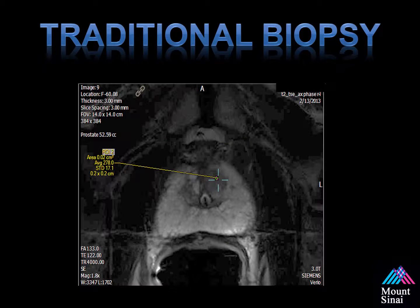This is an example of an axial T2-weighted image of a gentleman who had two prior negative prostate biopsies. If you look, there's an area on the anterior left portion of the screen that has a low signal intensity on T2-weighted imaging.